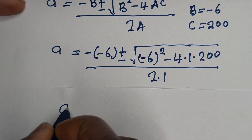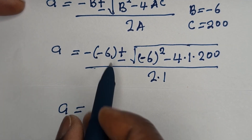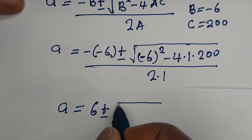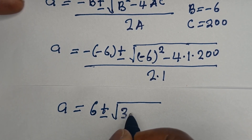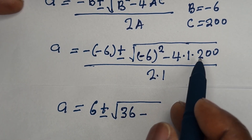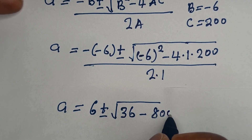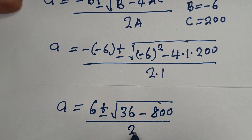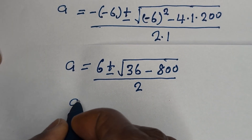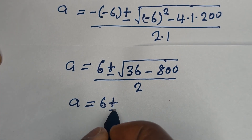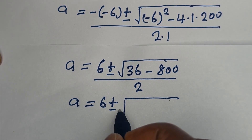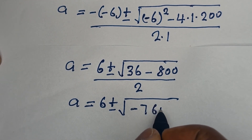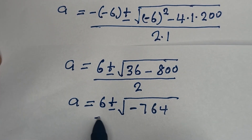Substituting: A equals minus of (minus 6), plus or minus square root of (minus 6) squared minus 4 multiplied by 1 multiplied by 200, over 2 multiplied by 1. That gives us 6 plus or minus square root of 36 minus 800, which is 6 plus or minus square root of minus 764, over 2.